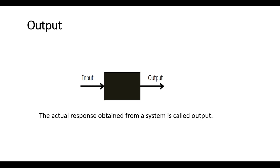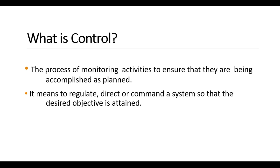We need to cover each and every basic of the subject, then only you can understand the next levels. Control is the process of monitoring activities to ensure they are being accomplished as planned. When we have designed a system, we must ensure it is giving us a proper output. Control means to regulate, direct, or command a system so that the desired objective is attained.